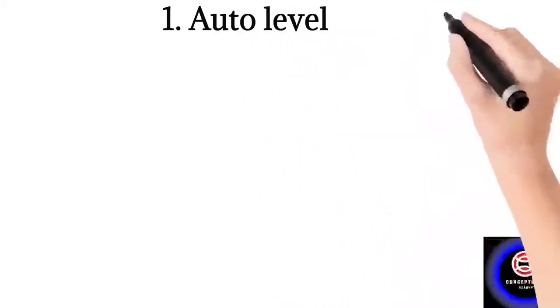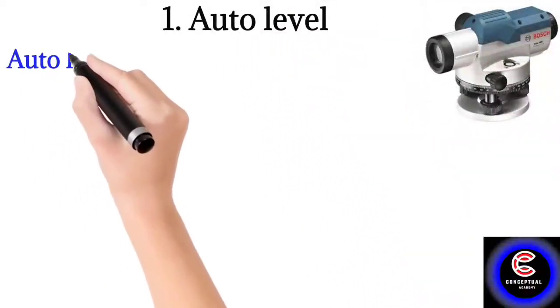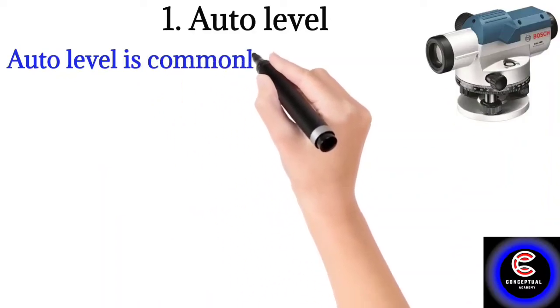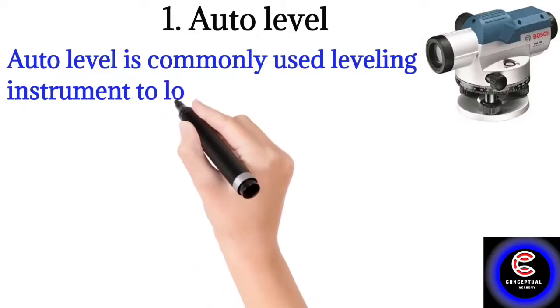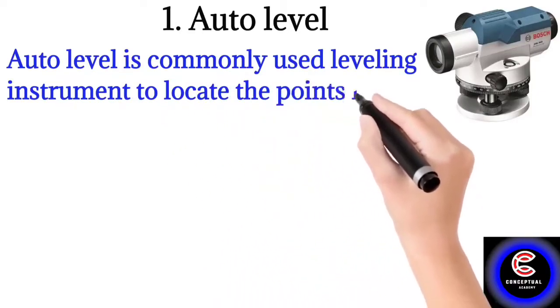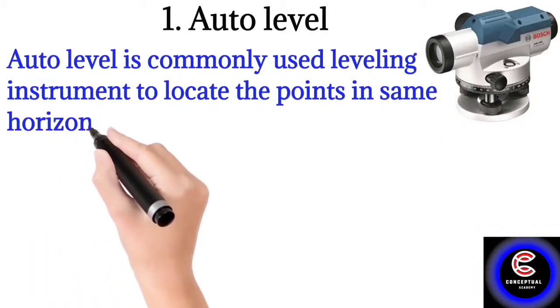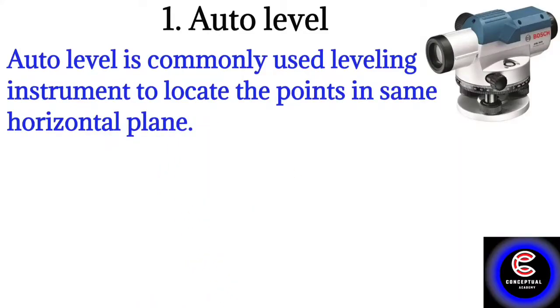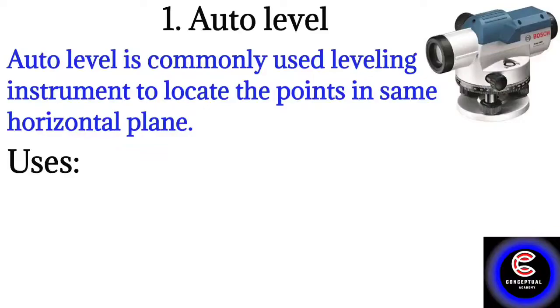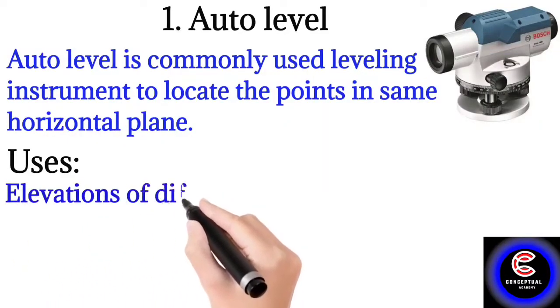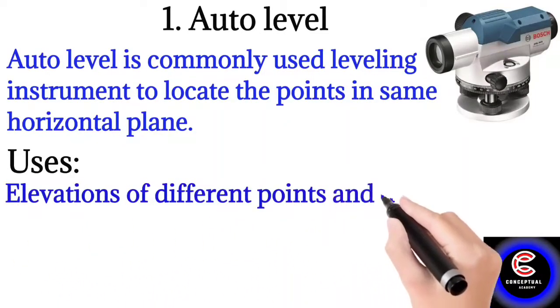Instrument number one: Auto level. As you can see in the picture, an auto level is a commonly used leveling instrument to locate points in the same horizontal plane. Uses of auto level: Elevations of different points and distances between points of the same elevation can be determined by auto level.